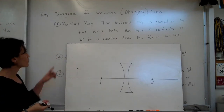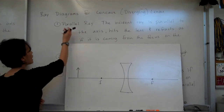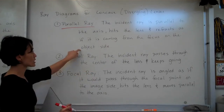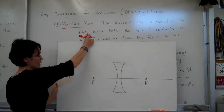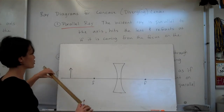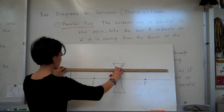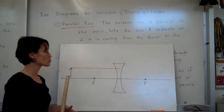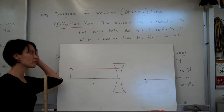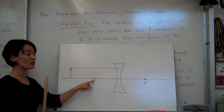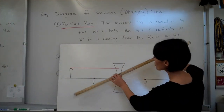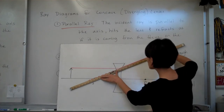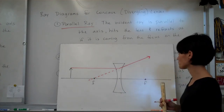Starting with the parallel ray for the concave lens: the incident ray is parallel to the axis, hits the lens, and refracts as if it's coming from the focus on the object side. Remember that these lenses spread light out. Take your rays to the center of your lens — that's when we start seeing the bending. Line up your ruler with the focal point on the object side and draw a dashed line to show where the refracted ray appears to come from. That dashed line will be useful when we look at our virtual image.